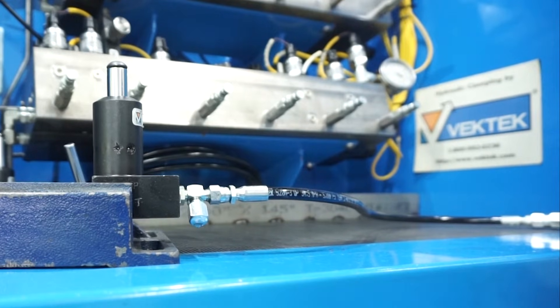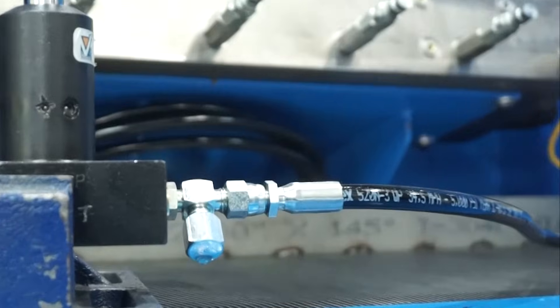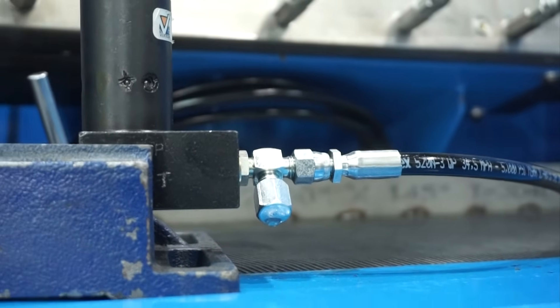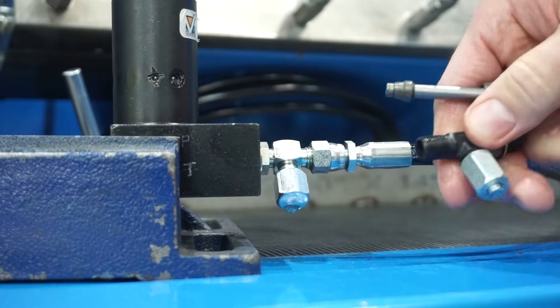The bleed port or fitting can be a fitting, cap, or plug without an elastomeric seal, like this JIC fitting or these tube fittings.